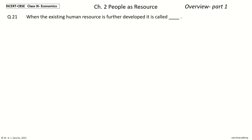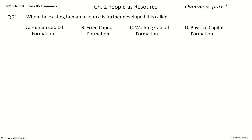Question 21: When the Existing Human Resource is Further Developed, it is called ___. The options are: Human Capital Formation, Fixed Capital Formation, Working Capital Formation, Physical Capital Formation. Your time to choose. And the answer is: Human Capital Formation. So, when the Existing Human Resource is Further Developed, it is called Human Capital Formation.